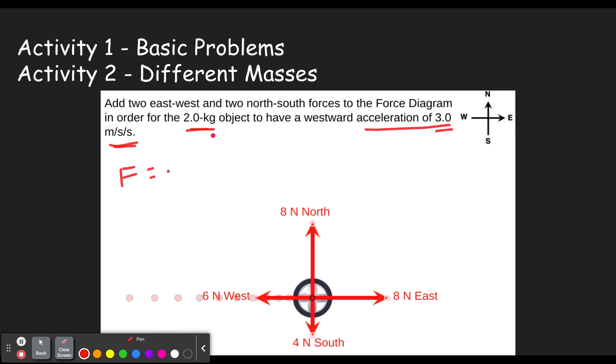So our equation was F equals ma. We know m is 2 kilograms. We know a is 3 meters per second squared or meters per second per second. So then we plug into this F equals 2 kilograms times 3 meters per second squared and that gives you F equals 6 newtons. But remember that means that the net force has to be 6 newtons.